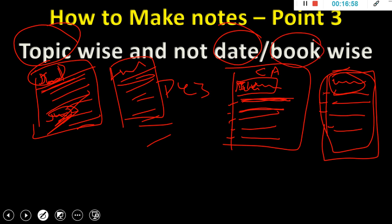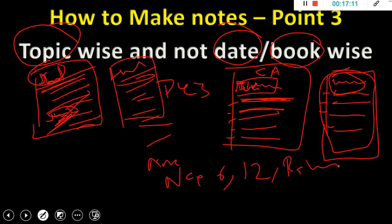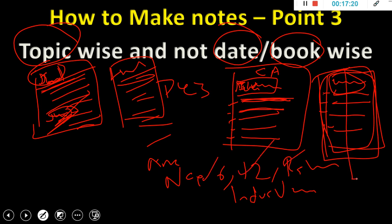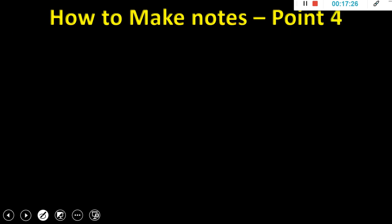The same applies to textbooks. When you read about Indus Valley Civilization from NCRT class 6, class 12, and other sources, all those points should come into one page under 'Indus Valley Civilization' — not a separate note for each textbook. Point number four: prelims and mains separation is generally not needed, because they largely overlap. Only mains-specific topics like world history, post-independence, society extras like globalization, and ethics need a separate section.